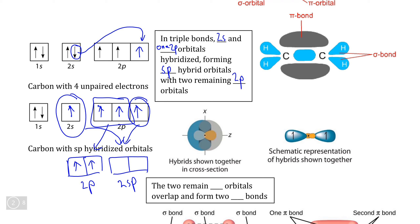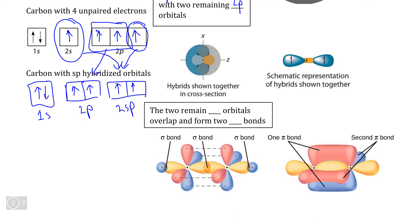The 1s subshell is not involved in this hybridization at all, so it is unaffected by this process. Carbon still has four unpaired electrons, but two of the p orbitals remain unhybridized, and the 2s subshell has only hybridized with one of the p orbitals, which affects the bonding fairly significantly.